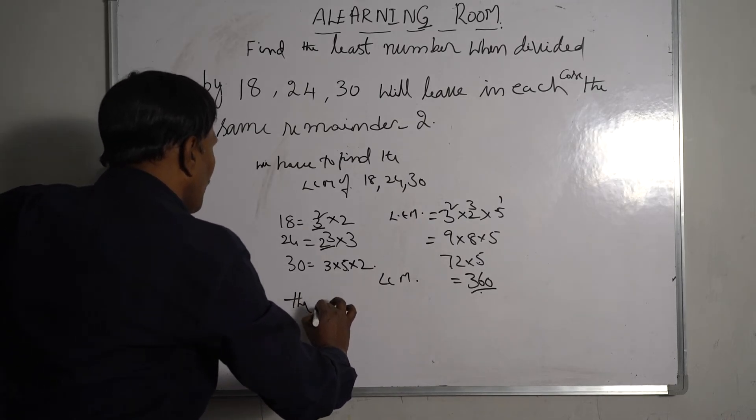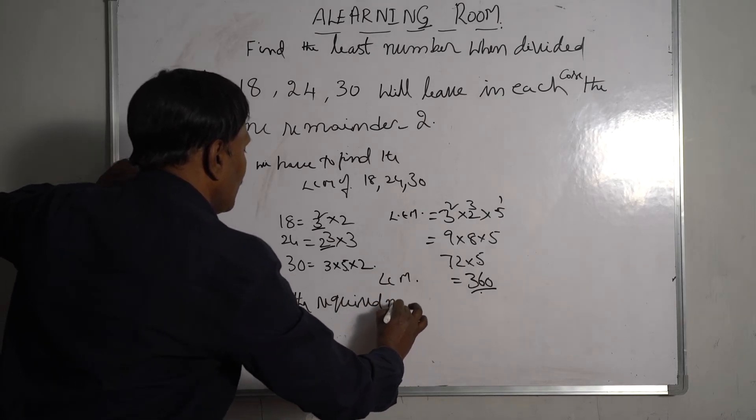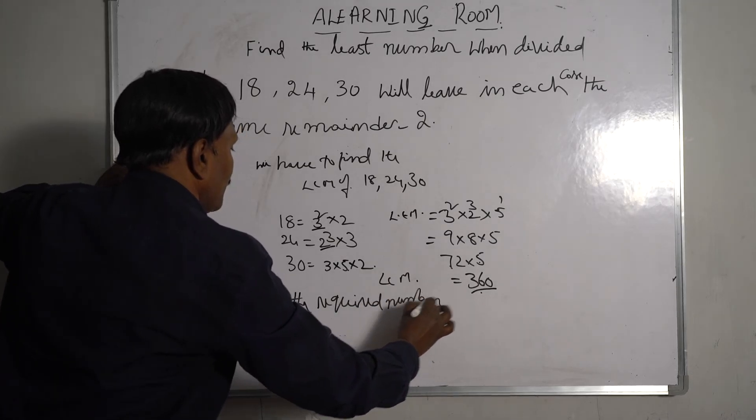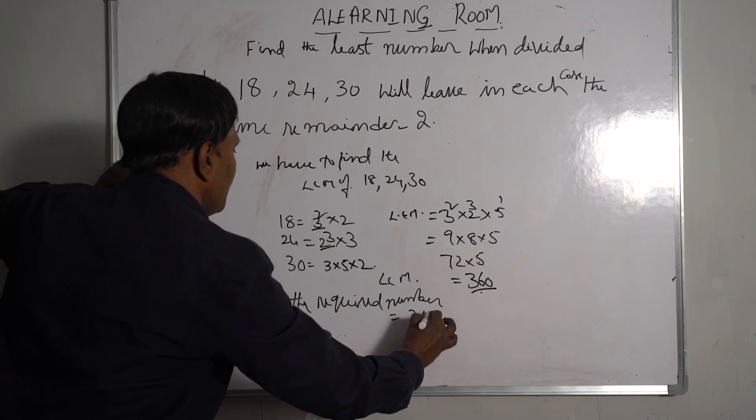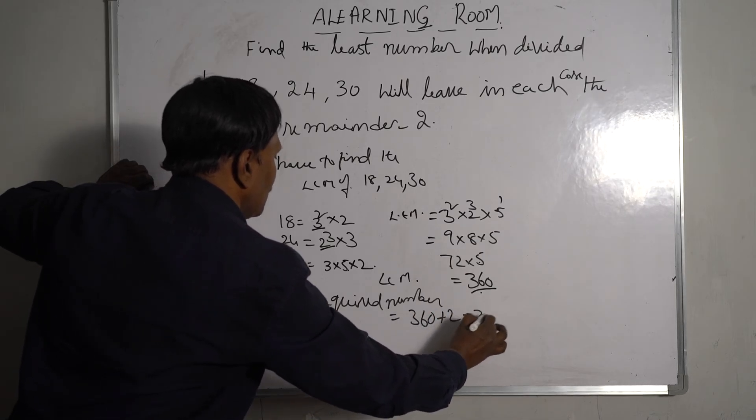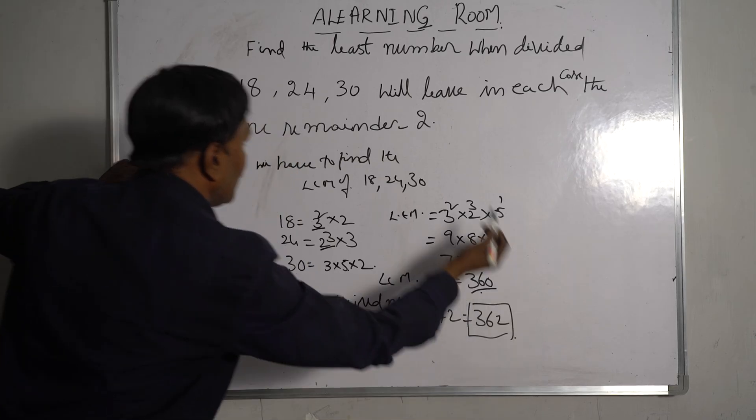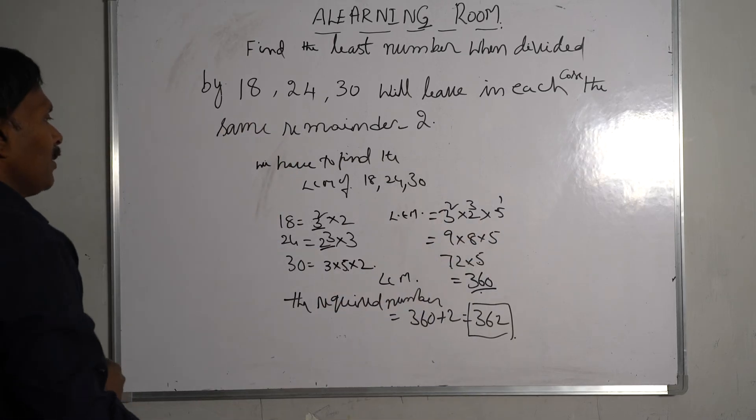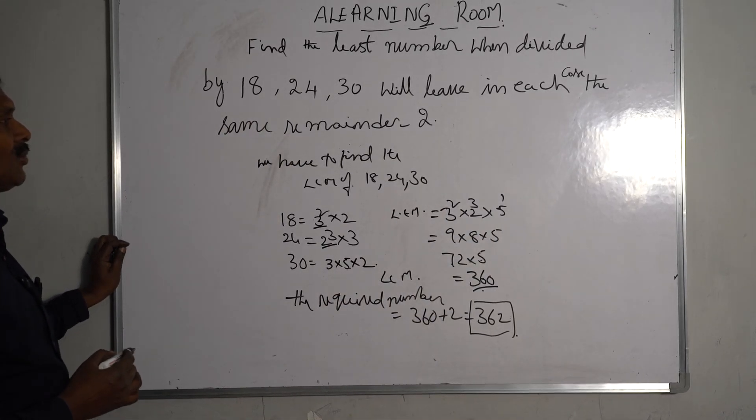The required number is 360 plus 2, that is 362. So that is the answer for this problem. I hope you understood well.